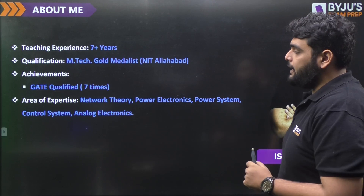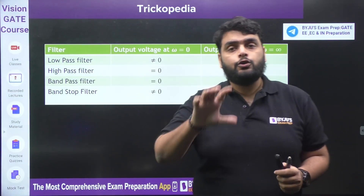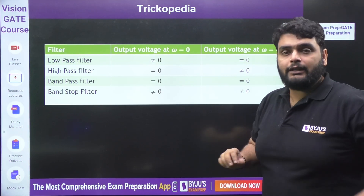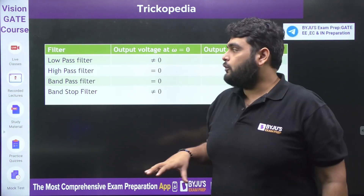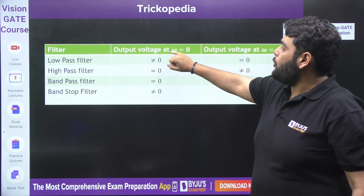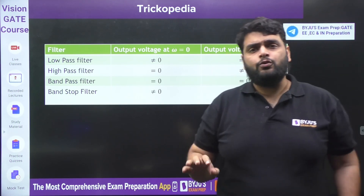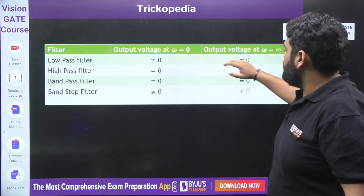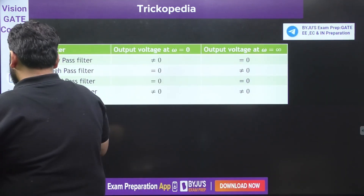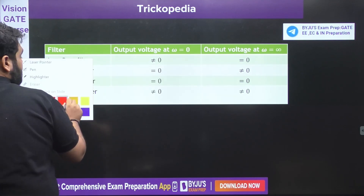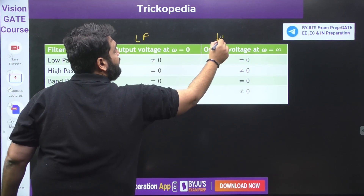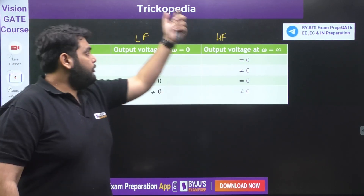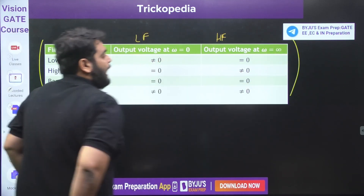I am 7 times GATE qualified. To identify the filter, you need to remember one simple table. Whatever the question is given — whether in transfer function form or as a circuit — you have to find the output voltage at ω equal to zero and ω equal to infinity. You only need to find out whether it is zero or not. For a low pass filter, output is not zero at ω=0 but is zero at ω→∞. For a band pass filter, output is zero at both low and high frequency. This table is very important.